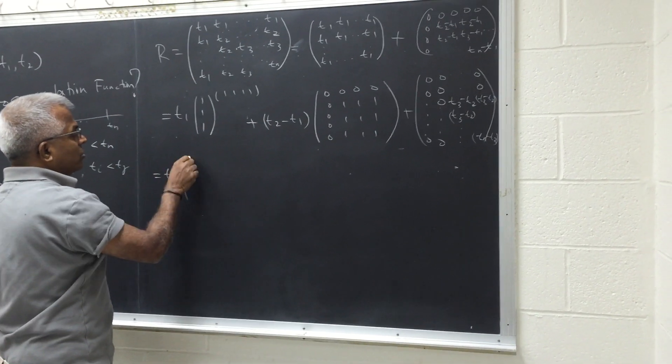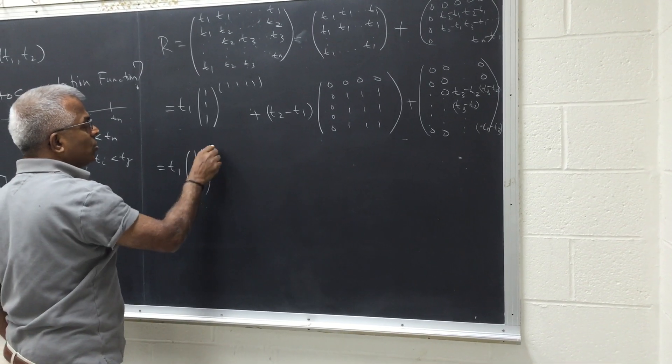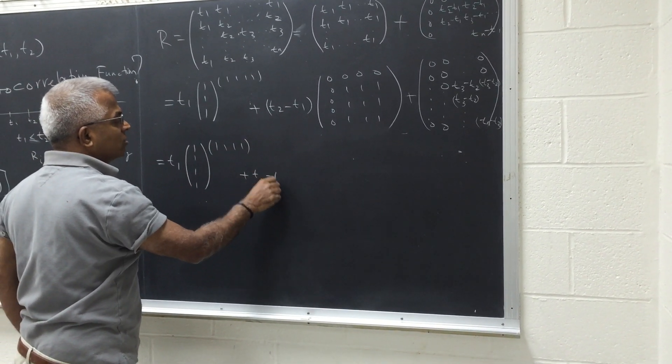so this can be written as t1. This will be all ones, one, one, one, one, one. Plus t2 minus t1.